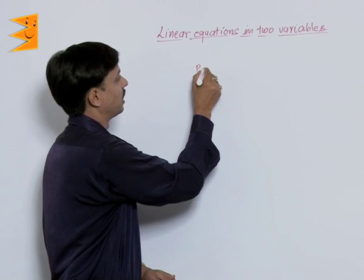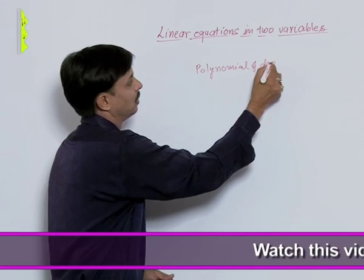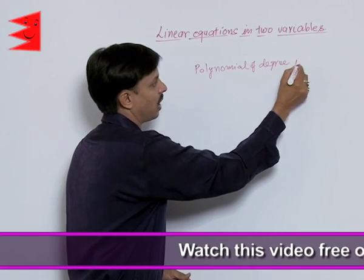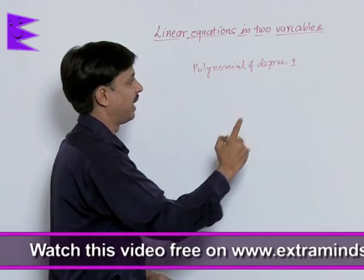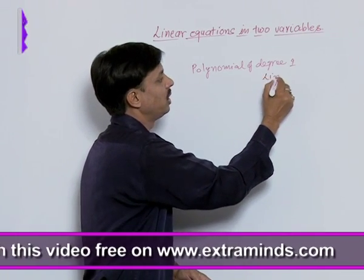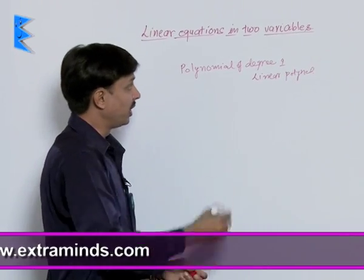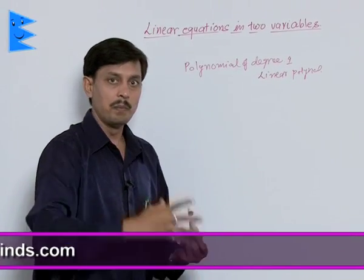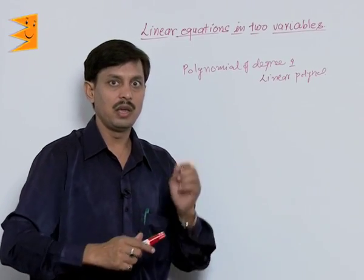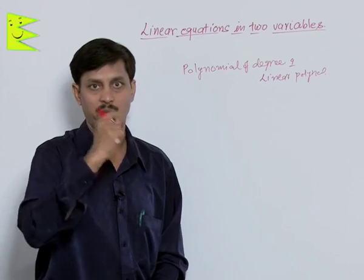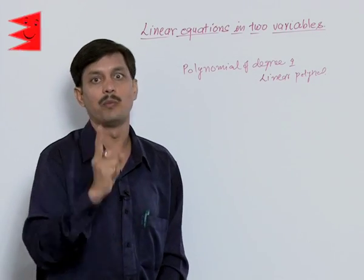Polynomial of degree 1 is known as linear polynomial. Linear polynomial may have two variables, three variables.